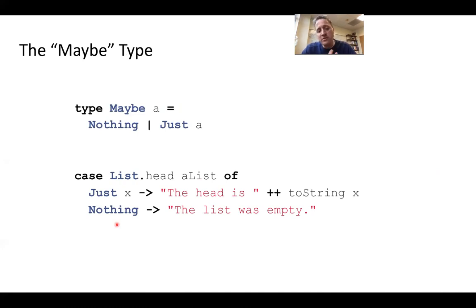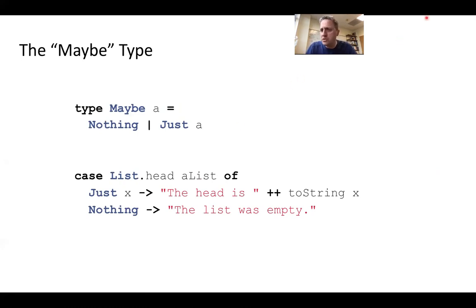You have to have these slightly more complicated type annotations, but I think it's a beautiful solution to the problem of not knowing beforehand what type of thing you're going to return.